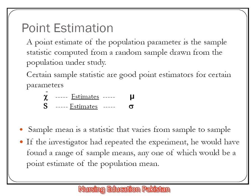We have stated that this is a single value. A point estimate of the population parameter is a sample statistic calculated from a random sample drawn from the population under study. We calculate the specific value and then apply it to the population parameter.